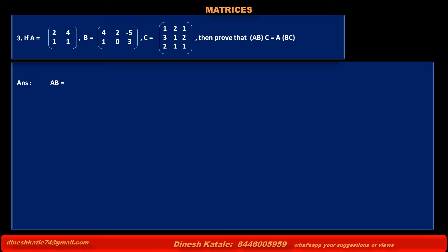Answer. Product of matrices AB is equal to Matrix A [2, 4; 1, 1] into Matrix B [4, 2, -5; 1, 0, 3]. The first element is found by multiplying elements in the first row of matrix A into corresponding elements in the first column of matrix B, that is 2 into 4 plus 4 into 1.